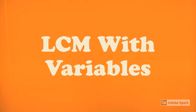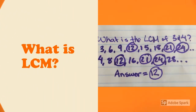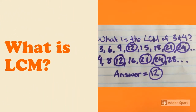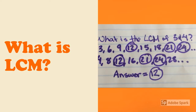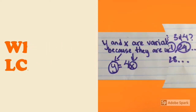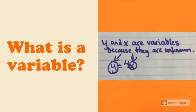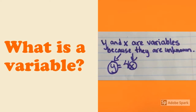Hey guys and welcome back! Today, we will be learning how to find the least common multiple of two or more numbers with variables. The least common multiple of two or more numbers is the smallest number that the numbers can divide evenly into. A variable is a letter that replaces an unknown number.